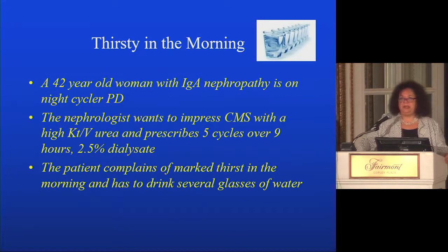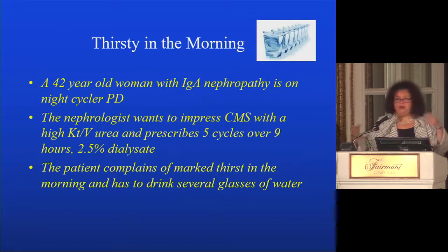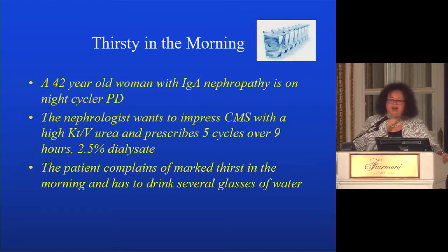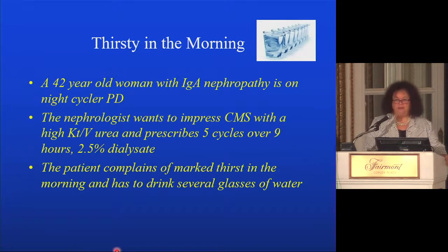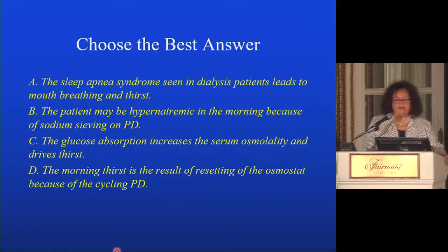A patient starts on night cycler peritoneal dialysis. The nephrologist prescribes five cycles over nine hours with 2.5% dialysis fluid to achieve a high KT/V urea. The patient complains of thirst in the morning and has to drink several glasses of water, drinking back much of the ultrafiltration that occurred the night before. Which is the best answer? The patient may be hypernatremic because of sodium sieving during this rapid exchange PD, or glucose absorption overnight increases serum osmolality driving thirst, or it may be resetting of the osmostat.